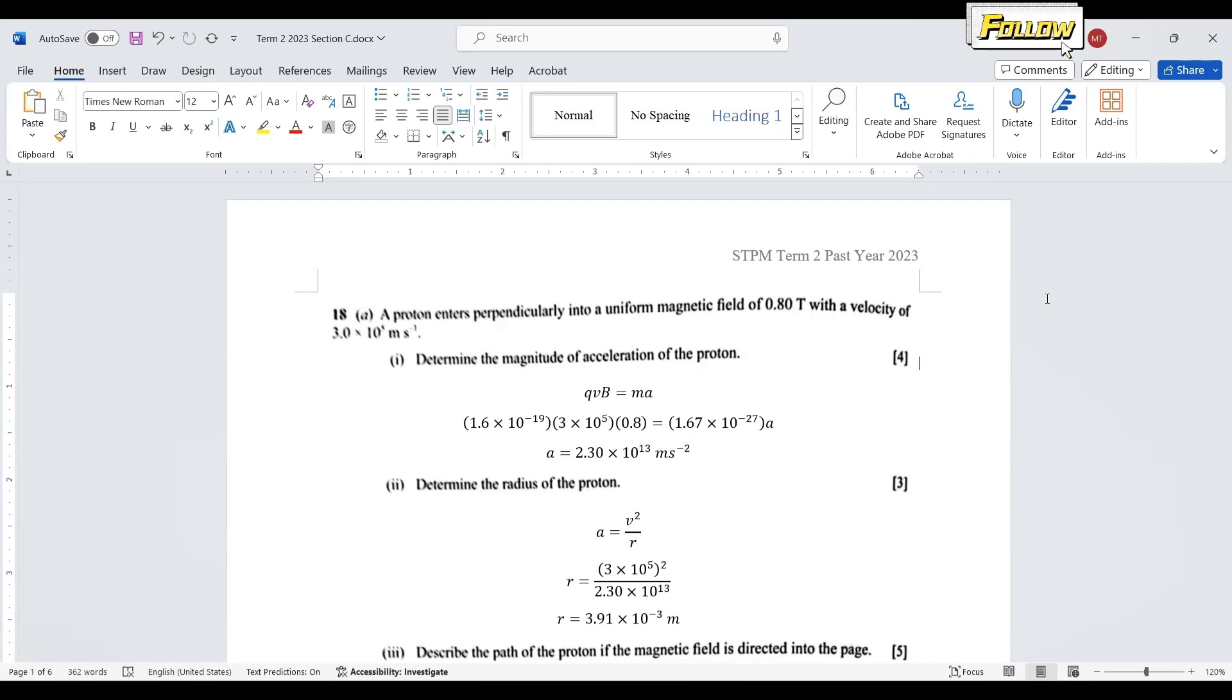We can get the centripetal acceleration as 2.3×10¹³ meters per second squared. I'm not sure if this is correct since the question is worth four marks for such a solution. If you have a different answer, you can leave it in the comments for further discussion.